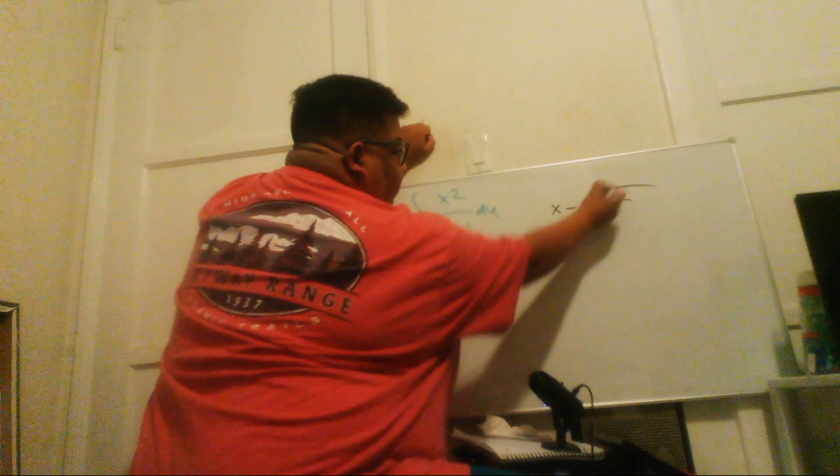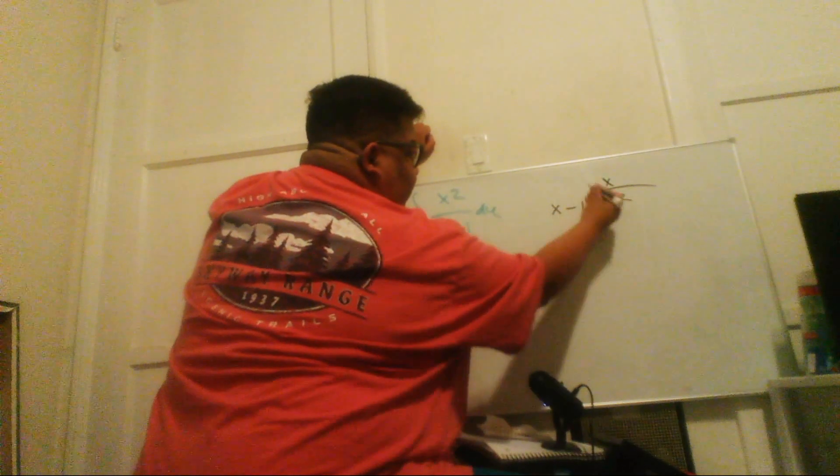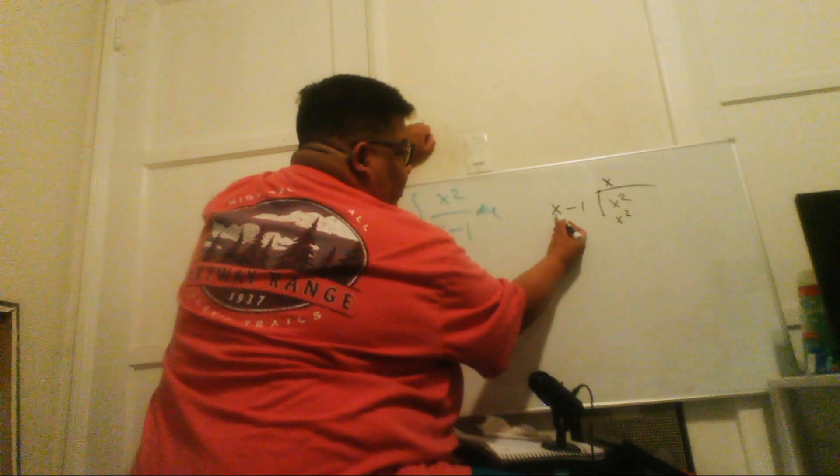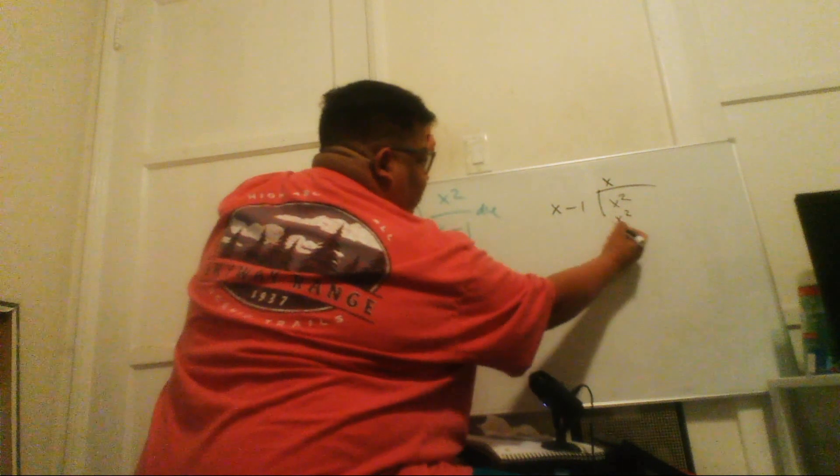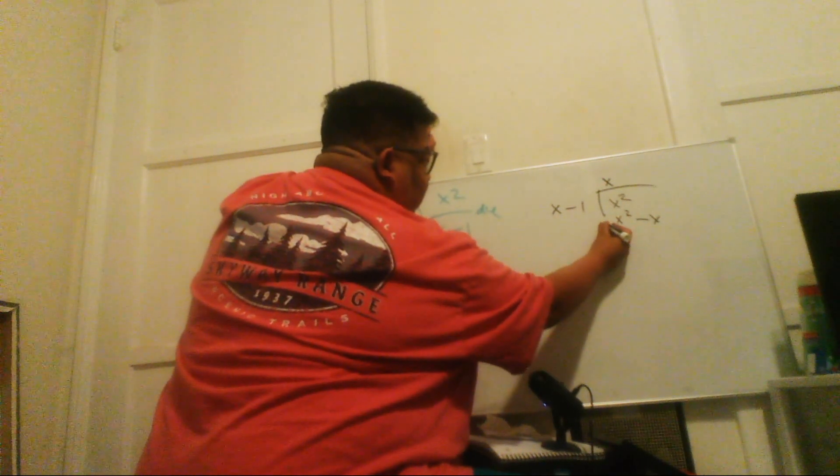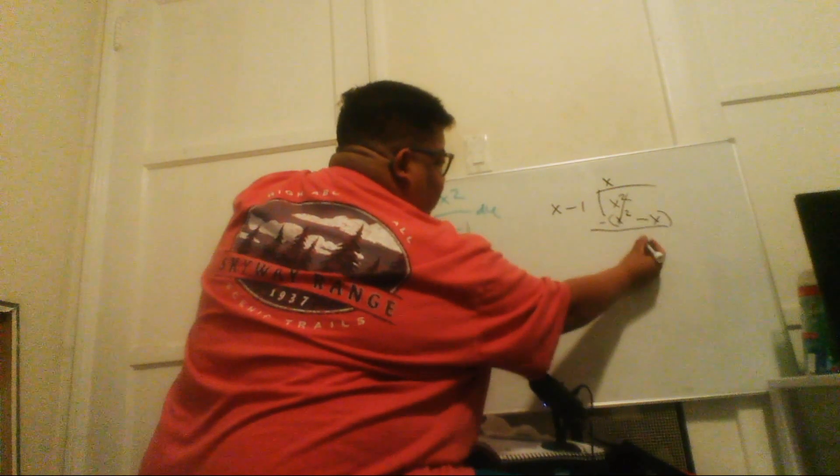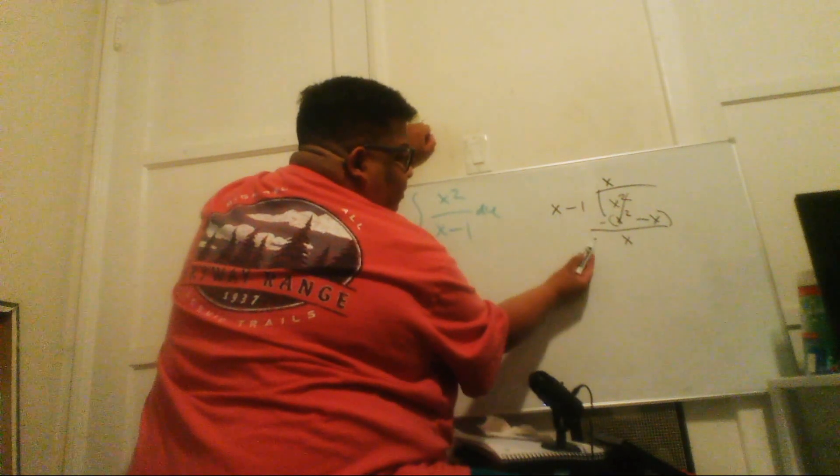What do I multiply x by to get x squared? That would be x times x, which equals x squared. Then it will be minus 1 times x, that will be minus x. Then we subtract everything, so this cancels and this becomes x.